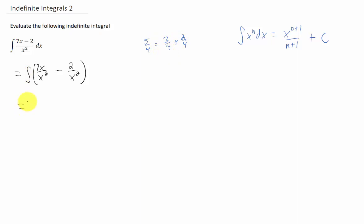Now that we've split up this integral into two pieces, we can simplify. But maybe we're still not at a point here where we can comfortably integrate. So an optional step here is to rewrite this as 7x to the negative first power minus 2x to the negative 2 power.